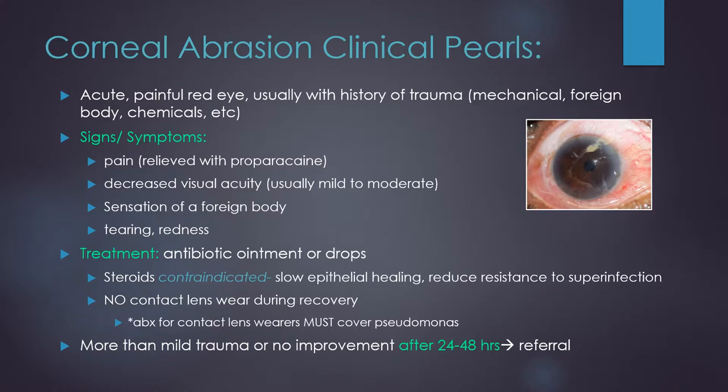As you likely deduced, this patient with an acute painful red eye and a history of trauma has a corneal abrasion — basically a scratch on the outside layer of the eye. One clue is that the patient's pain is relieved instantly with proparacaine. They usually have mild to moderately decreased visual acuity, the sensation of a foreign body, as well as tearing or redness. Treatment is with antibiotic ointment or drops, but steroids are contraindicated. Contact lens wearers should not wear them during recovery. If the patient doesn't improve after 24 to 48 hours or had more than mild trauma, they should be referred to a specialist.